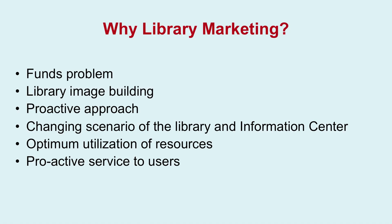Why library marketing? Why are we talking about this in the library and information science context? Number one is the funds problem. You have to build the image of the library, do something proactive, and address the changing scenario of the library and information center. There is a need for optimum utilization of resources and proactive service to users. A paradigm shift is taking place from a conventional library system to the modern library system — what we call transformation today.